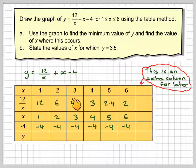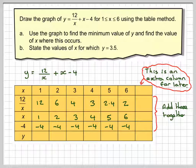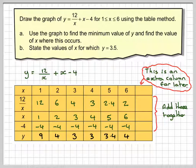Remember the bit here in the middle is to help us work out the y coordinate only. So we add these together. We can do 12 plus 1 take away 4, which is 9. 6 plus 2 take away 4, which is 4. 4 plus 3 take away 4, which is 3. 3 plus 4 take away 4, which is 3. 2.4 plus 5 minus 4 is 3.4. 2 plus 6 take away 4 is 4.